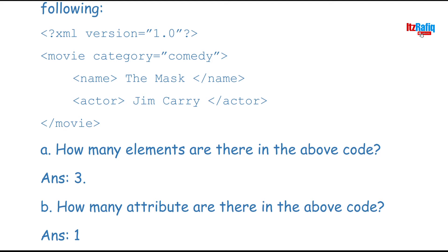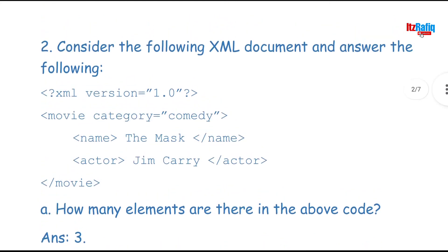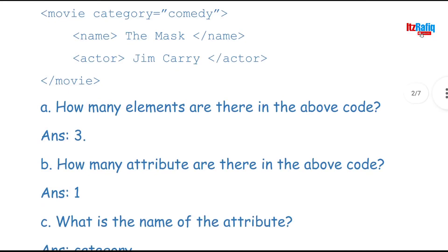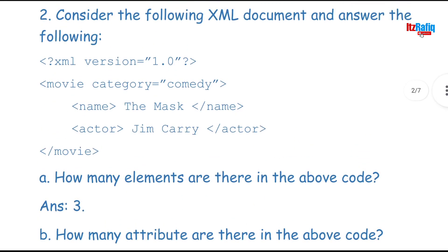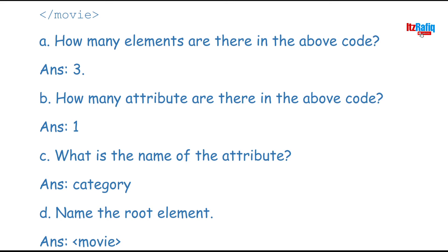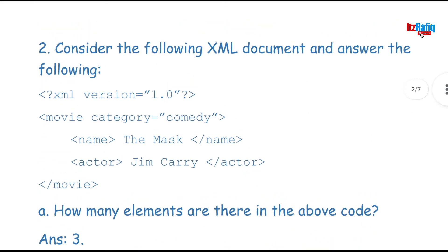How many attributes are there in the above code? We have only one attribute, which is category. So the answer is one — there is just one attribute. What is the name of the attribute? The name of the attribute is category. Name the root element: the root element is movie. We will not write category because it is an attribute of movie, not an element. If asked for the root element, we write only movie.